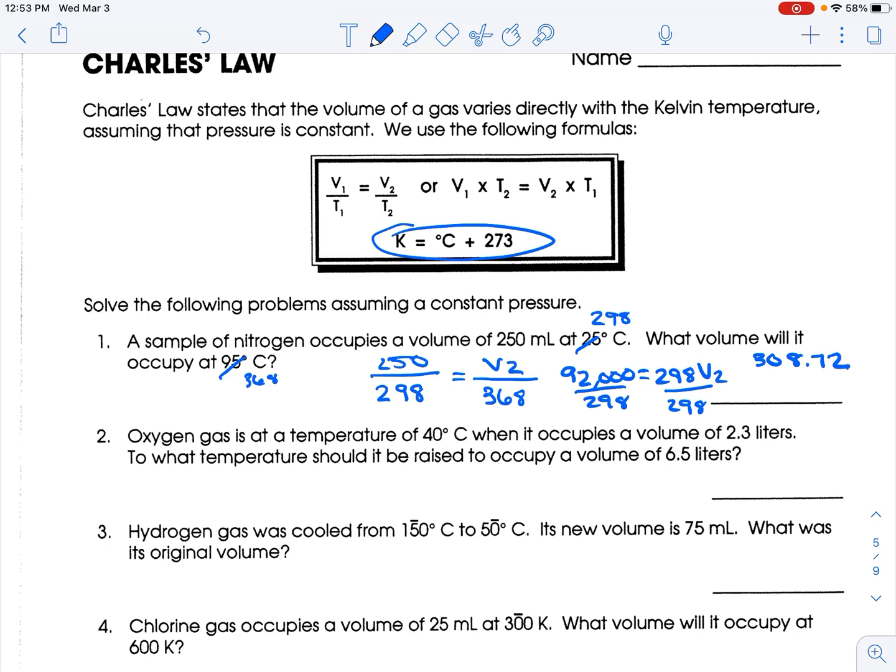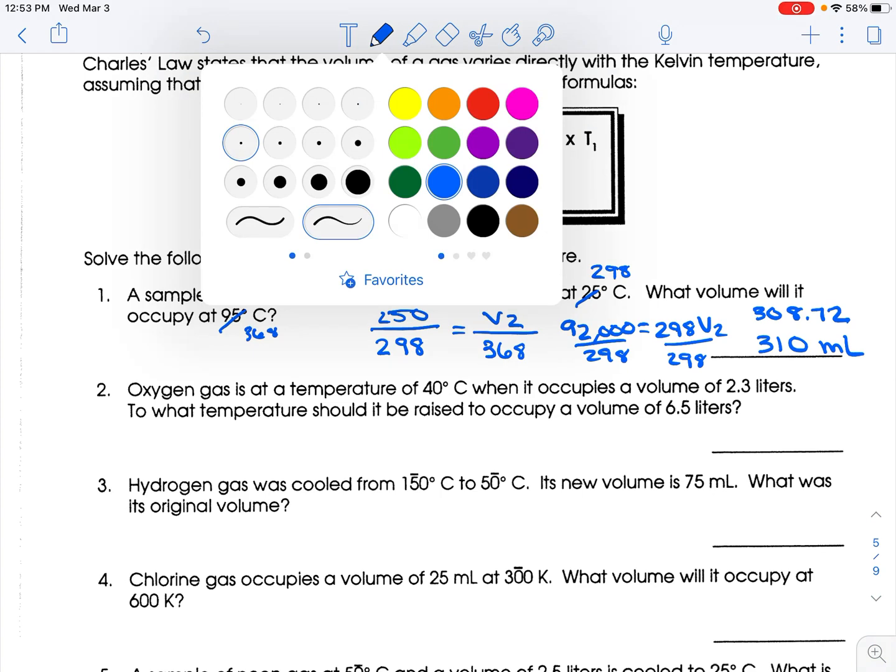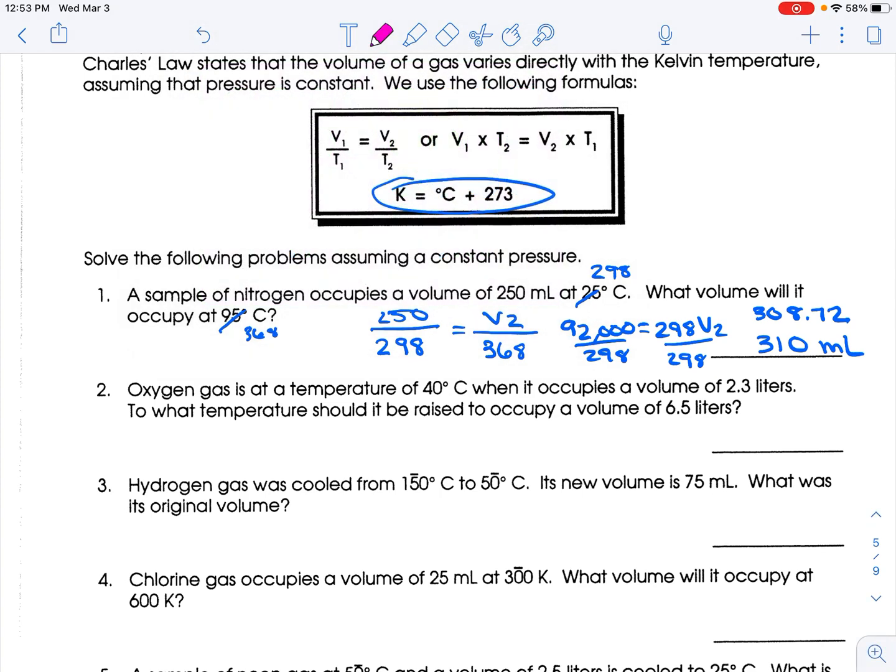Now, if your teacher is mean, like I usually am, I round to sig figs. So the volume is two sig figs. Our Celsius temperatures are at two sig figs, but I'm going to go with the two sig figs. So how about 310 milliliters? If your teacher is not mean, you can keep it as 308.7 or 309.